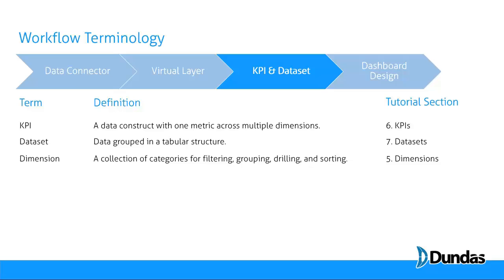Terms that come into play when you're designing are dimensions. If your KPI or dataset has a structure you want to continue to navigate through, it will be put into a dimension — a hierarchy you want to reuse over and over. You'll define a dimension so that your KPIs and datasets can reference it, and then this dimension can be used on the dashboard to do filtering and aggregation. You'll learn about these in Section 5.